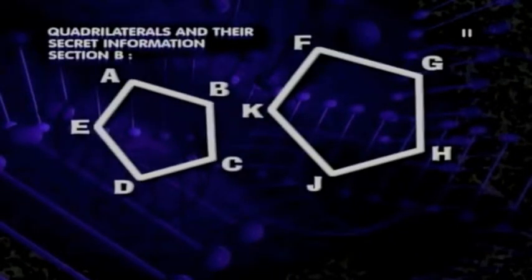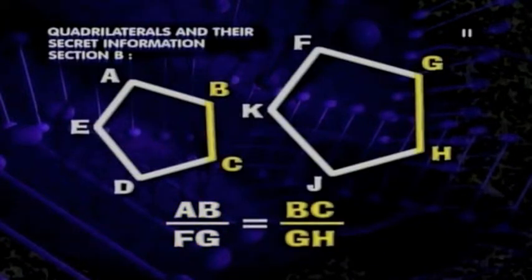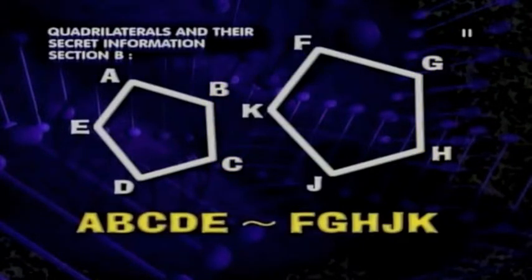Like, for example, in pentagons ABCDE and FGHJK, we set the lengths of the smallest sides, AB and FG, in ratio to one another, along with the lengths of nearby sides, BC and GH. By solving these ratios, we can easily prove pentagon ABCDE similar to pentagon FGHJK.